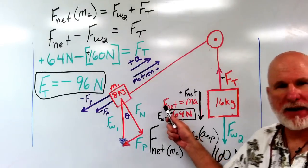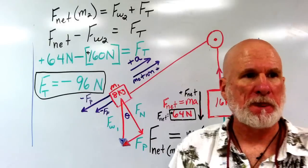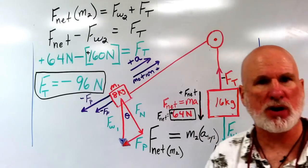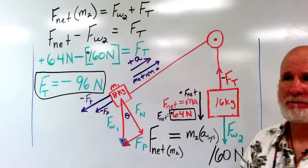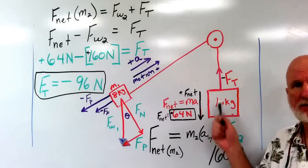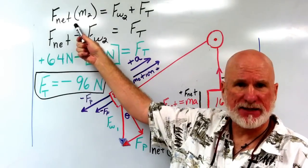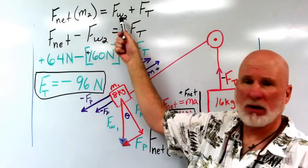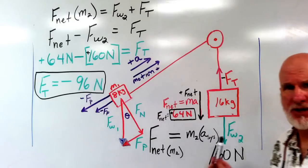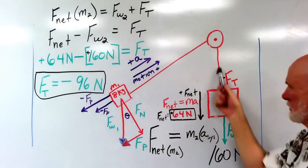I know that F_net is MA. My F_net is positive, and that's going to be 16 kilograms times 4 meters per second squared, which is 64 newtons. Positive 64 newtons is my F_net of that weight accelerating downward. The F_net of M2 is going to equal FW2, which is the weight, 160 newtons, plus the tension, which is negative.